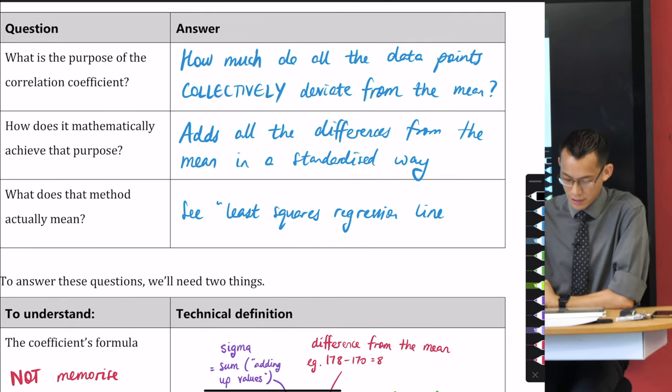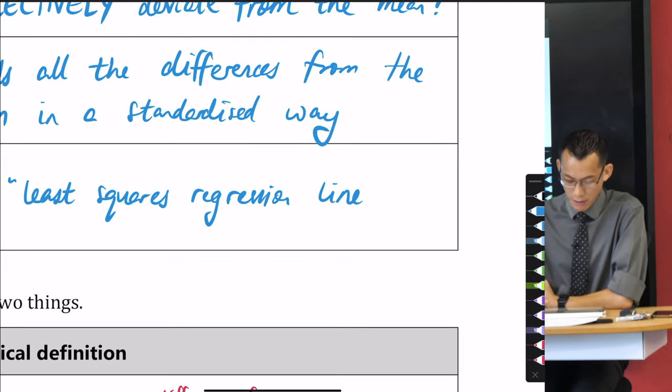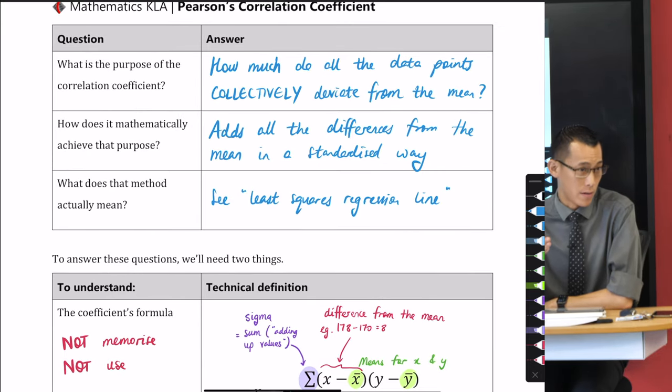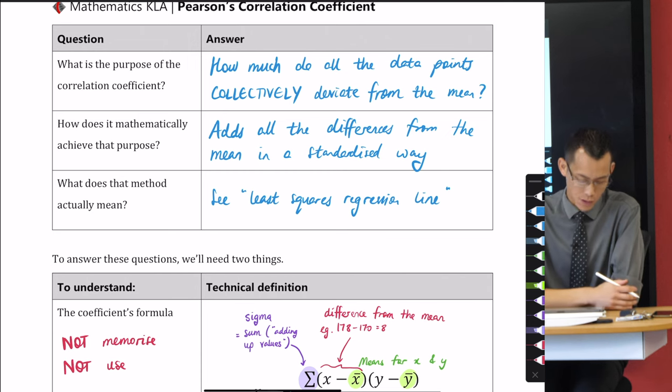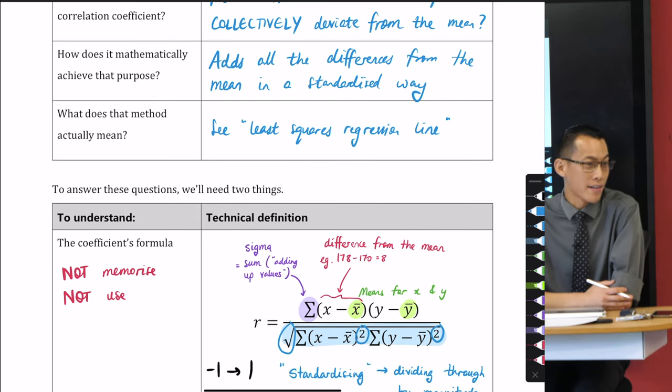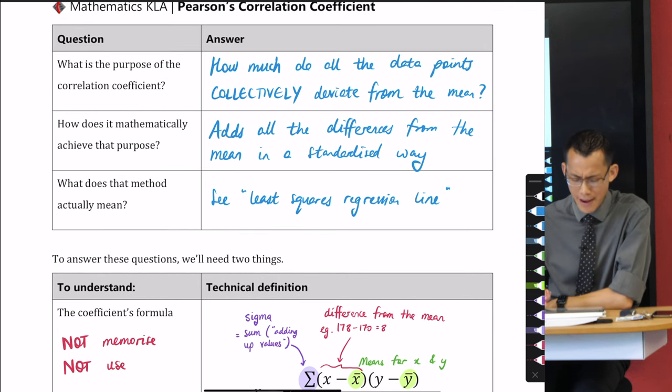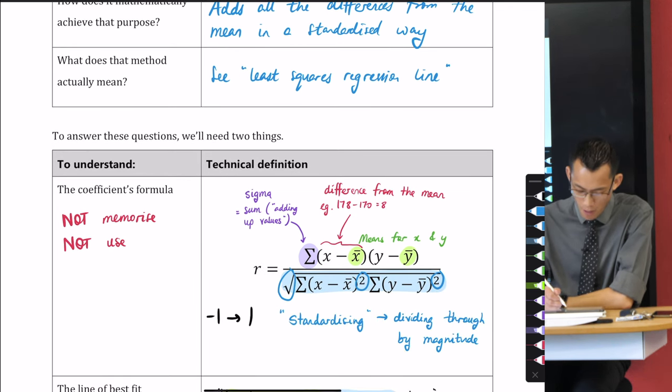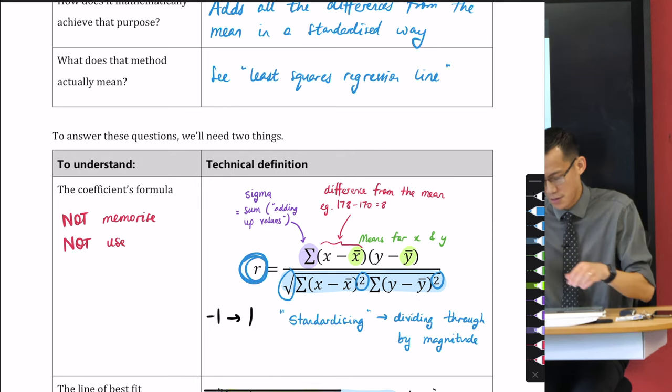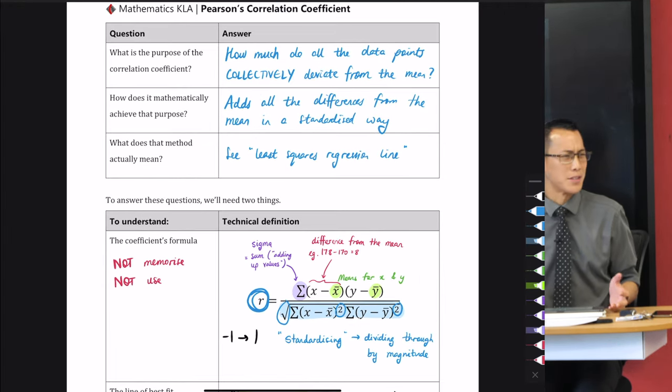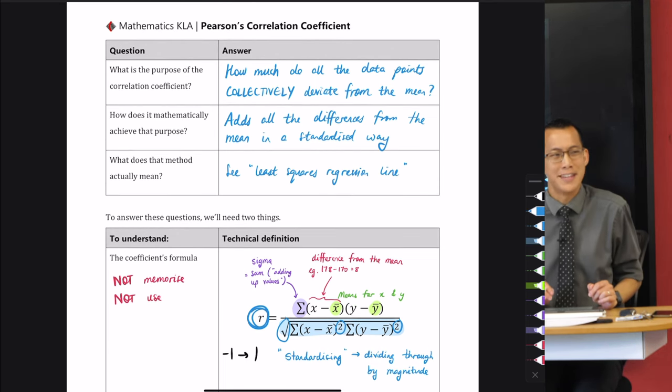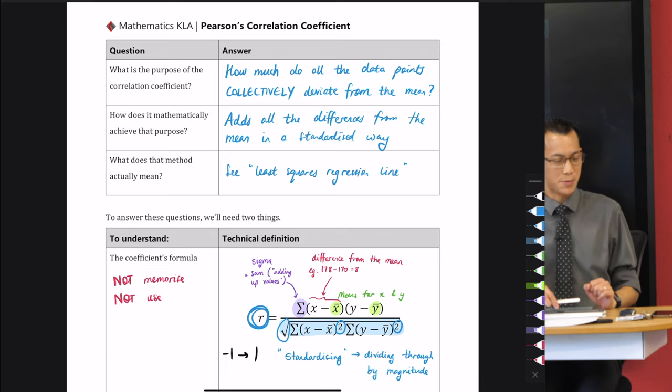And this gives us our sort of last bit that we were missing. What does the method actually mean? Just see the least squares regression line. What we are trying to define is from that least squares regression line, tell me the magnitude of all those squares. Can we quantify it in a standardized way? And that's all R is about. And by the way, that's my theory. When we say like, why is it R? Why is it that letter? Why is gradient M? Why is the unknown X? There's just some mysteries in maths because of the history of how we came up with these things.